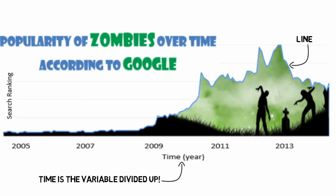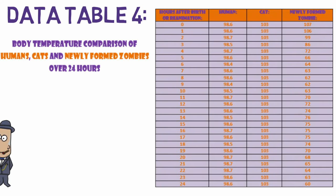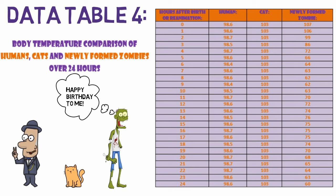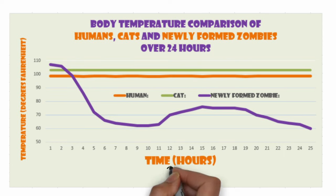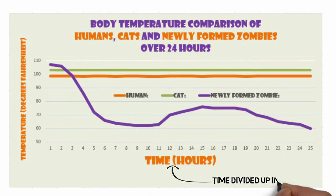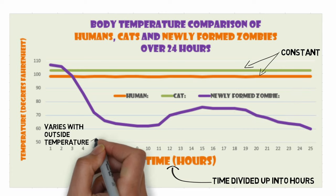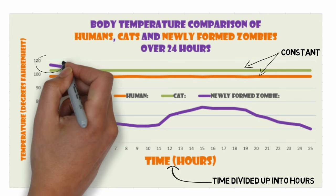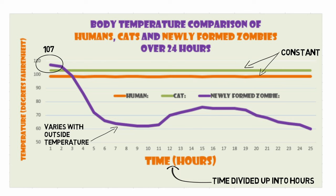Data table 4: here we have a comparison of body temperature between humans, cats, and zombies that have just been formed. When data tables become this complex, it's easy to see why graphing data is useful for scientists to help display their data and make conclusions about the meaning and trends inside the data. This data is best displayed as a line graph, where time is the one variable divided up on the x-axis and body temperature is on the y-axis. Once the data is put into a graph, it's easier to see the trends. Most organisms like humans and cats have constant body temperatures, but zombie body temperature varies with the temperature outside. It can also be inferred that the initial body temperature of the zombie of 107 degrees Fahrenheit must have been left over from the infected person's fever before they died.